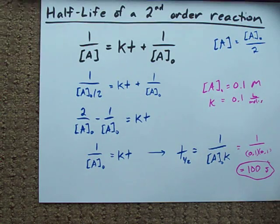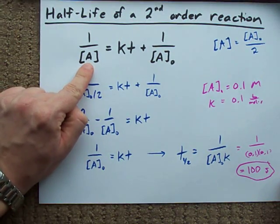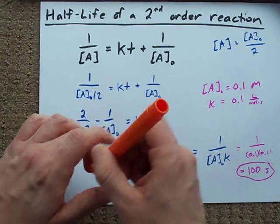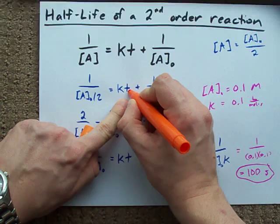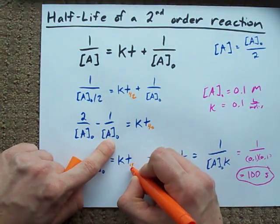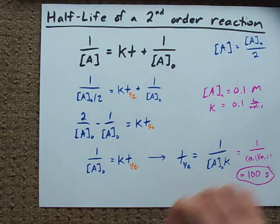Pretty sweet. Pretty easy. All you have to do is replace the concentration term with initial concentration divided by 2, and then solve for T. Because as soon as you make that replacement, this T becomes the actual half-life. You can get an equation for it and plug in numbers if you're given them.